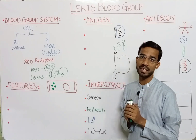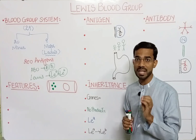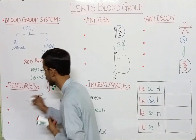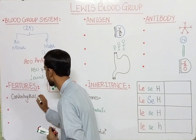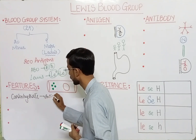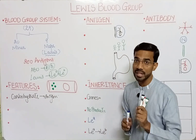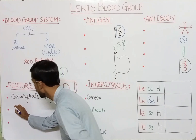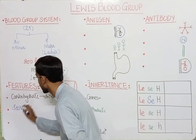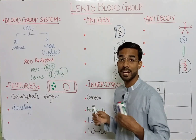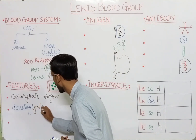Now we will discuss the features of the Lewis blood group system. The Lewis antigens are carbohydrate in nature and are secretory in nature. They are actually secreted in the gut epithelium.